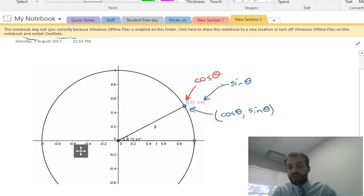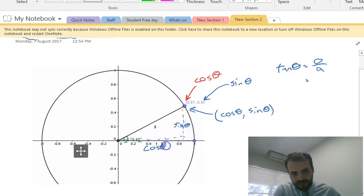And finally, what you should know is that tan theta equals opposite over adjacent, and in this case, that's opposite over adjacent, which is sine theta over cosine theta.